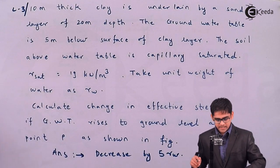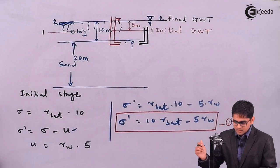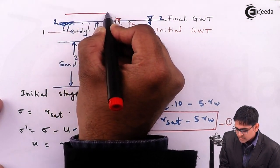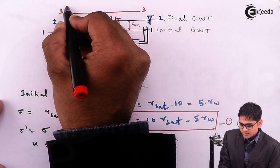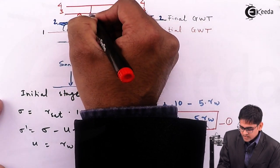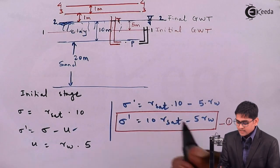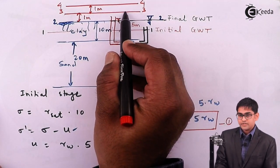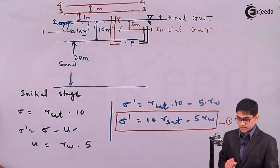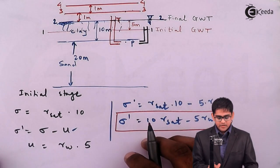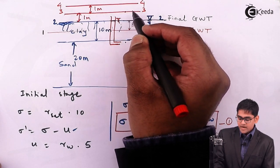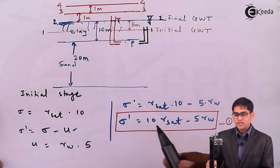Now I will extend this problem. Consider two additional water levels: level 3-3 which is 1 meter above ground level, and level 4-4 which is 1 meter above level 3-3. If the water table rises from ground level up to level 3-3, and further from level 3-3 to level 4-4, what will be the change in effective stress?